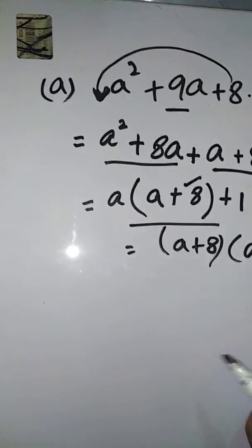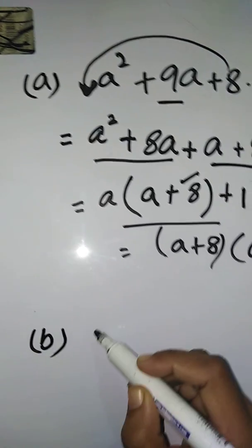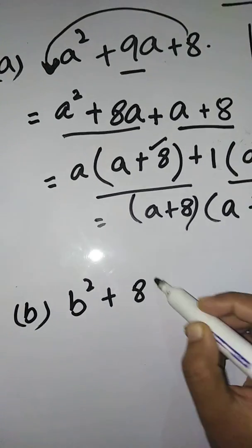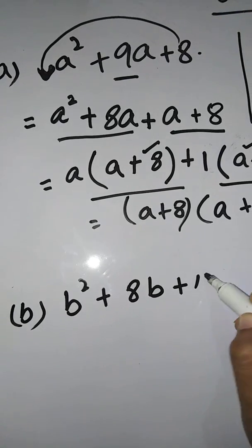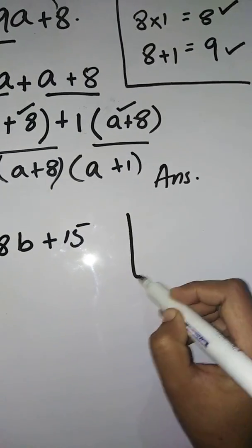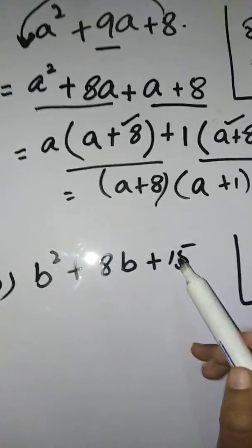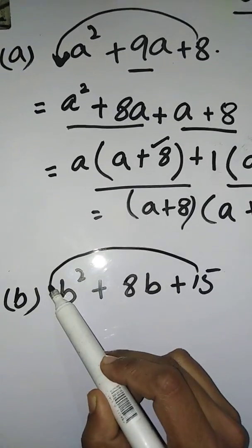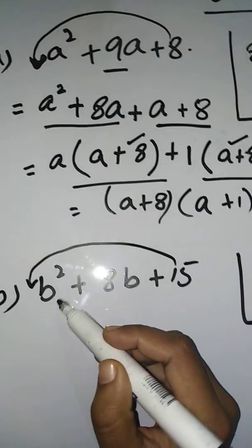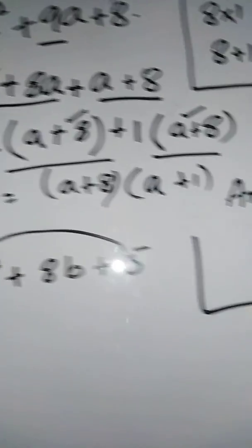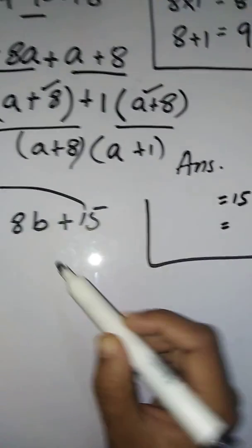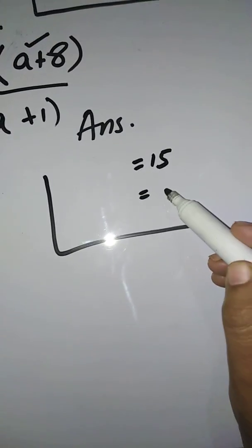Now I'm going to explain Part (b): b² + 8b + 15. Make a small table on the side. Multiply the first and last number — coefficient is 1, so 1 × 15 = 15. The middle term is 8.